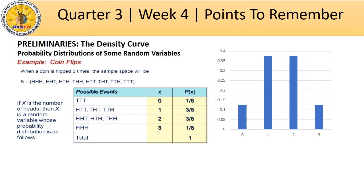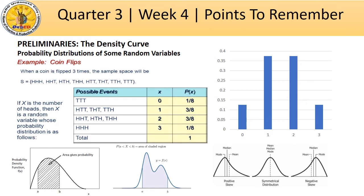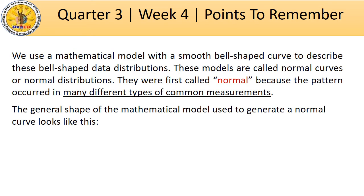But how does a density curve look like when we have a continuous random variable? Such examples of density curves are as follows. Notice that these are composed of curves that are irregularly shaped. Sometimes the values for the random variable are concentrated on the left, or sometimes concentrated on the right. But there are many times that the distribution of probabilities is symmetrical — this is what we call a normal curve. We use a mathematical model with a smooth bell-shaped curve to describe these distributions. These models are called normal curves or normal distributions, first called normal because the pattern occurred in so many different types of common measurements.